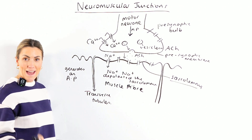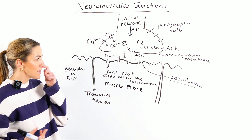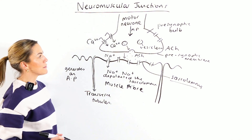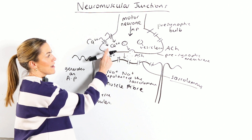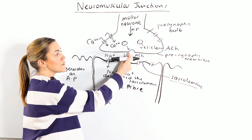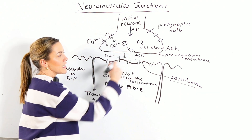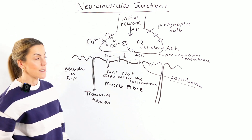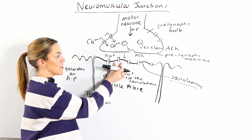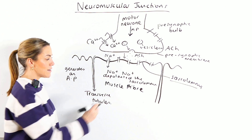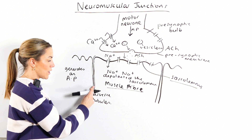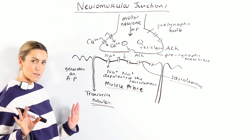Let's pause and recap. The action potential arrives in the presynaptic bulb, causing calcium ion channels to open. Calcium ions diffuse in, causing vesicles containing acetylcholine to fuse with the presynaptic membrane and release acetylcholine by exocytosis. Acetylcholine diffuses across the synaptic cleft and binds to acetylcholine receptors, opening sodium ion channels. Sodium ions diffuse into the muscle fiber, depolarizing the sarcolemma and generating an action potential that travels down the transverse tubules.